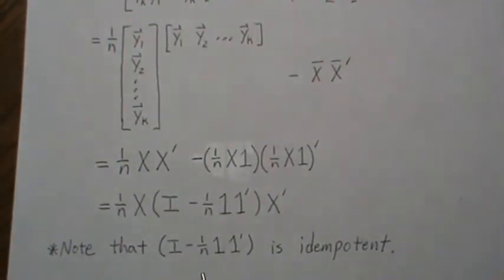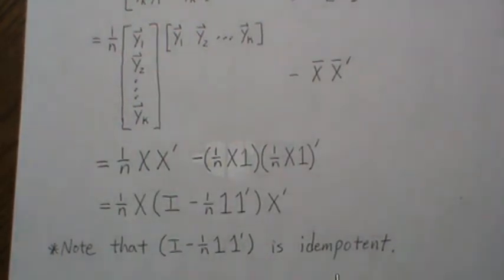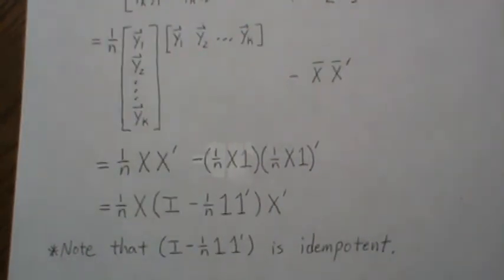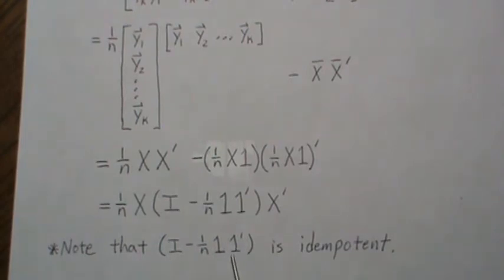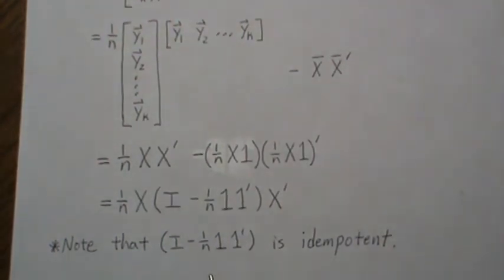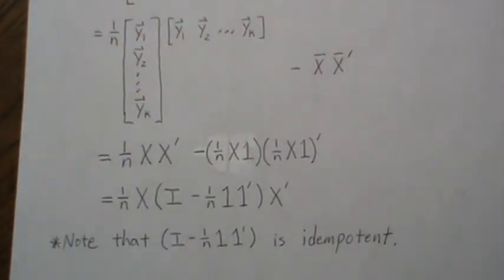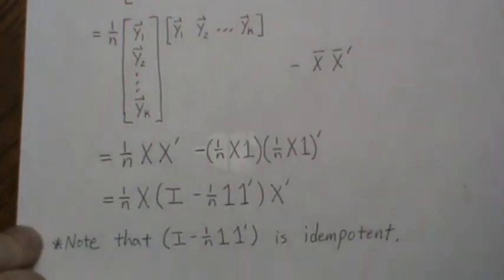One note, which we're not proving here due to time: this matrix right here is idempotent, meaning that matrix times itself is itself. Here's a quick question: is this full rank? The answer is no. I have a video called 'Idempotent Matrices' that deals with that. There's only one idempotent matrix that's full rank, and that's the identity matrix, so every other idempotent matrix is not full rank.